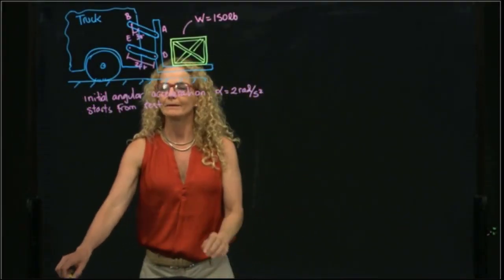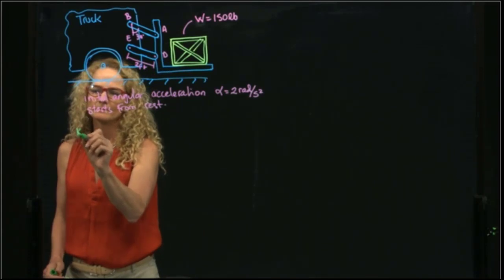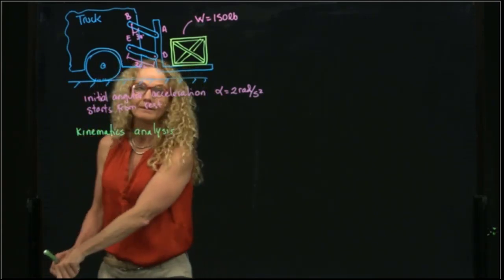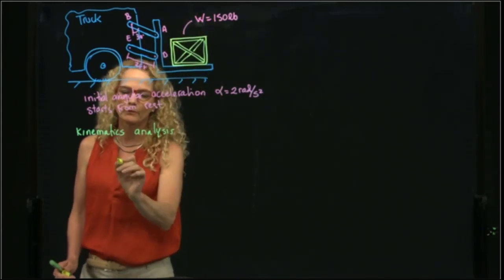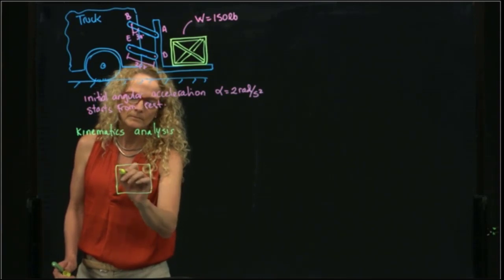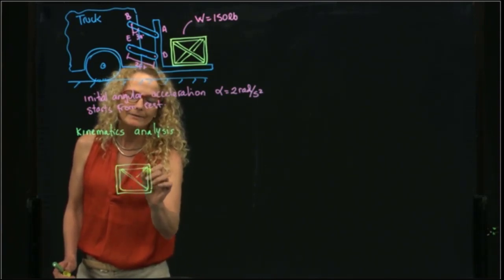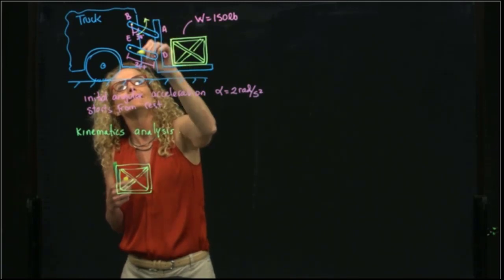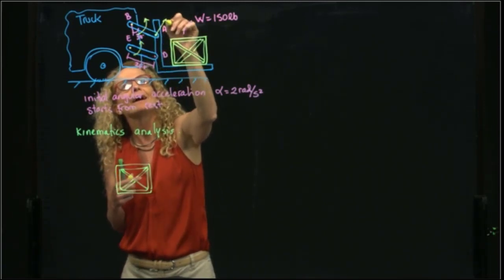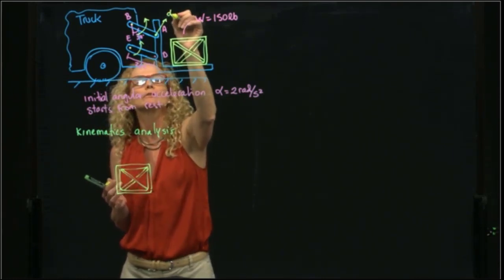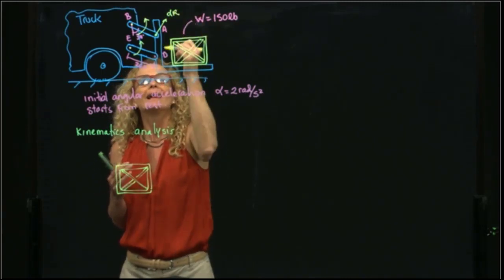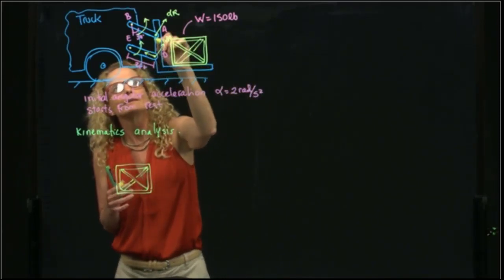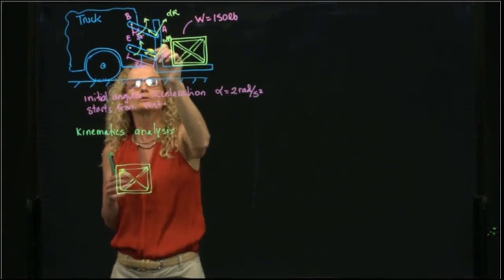So if we do first our kinematics analysis, we see that the crate is moving along with the platform. Therefore, if we see that it starts from rest, here we have a pin, and this is moving in this direction. So this point A has a tangential acceleration, and we know that the tangential acceleration is alpha, or angular acceleration, times R, and this point has also a tangent acceleration. And then we have a normal acceleration that points towards the point of rotation, which is omega squared R.